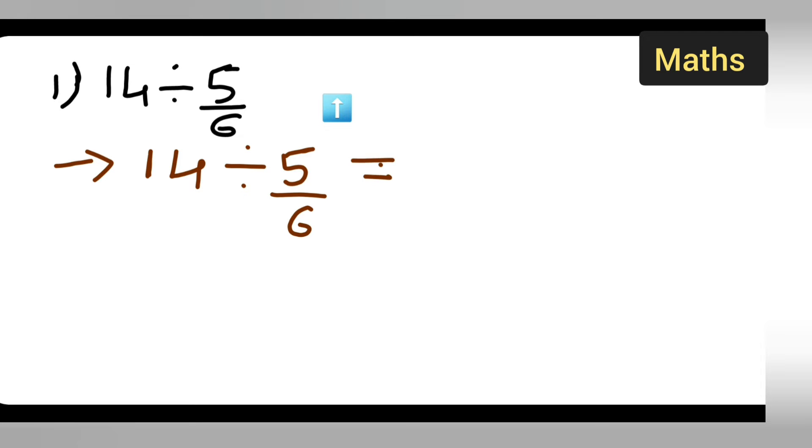Now, this is going to give you what? 14 multiplied by... How to divide this? We are just multiplying and then reciprocal of this 5 upon 6 is nothing but 6 upon 5.